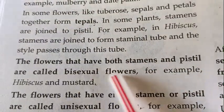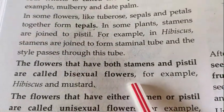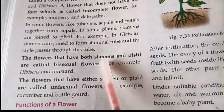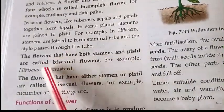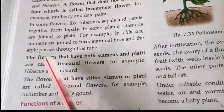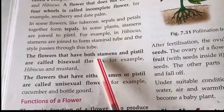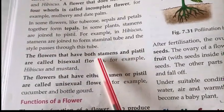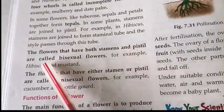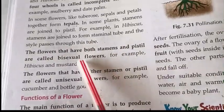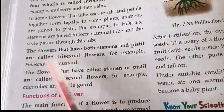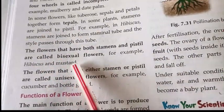The flower that has both stamens and pistil is called a bisexual flower. If the flower contains both reproductive organs — that is, stamens and pistil — then that flower is called a bisexual flower. For example, hibiscus and mustard.